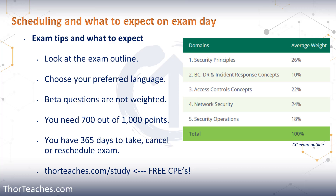On the exam, there will be beta questions or pre-test items — questions you are not graded on, and you won't know which they are. ISC2 is testing these out to decide whether to include them in future exams. They are randomly dispersed throughout the entire test, so answer all questions to the best of your ability. To pass, you need to score at least 700 out of 1,000 points. The questions are weighted, so a very easy question might be worth 2 points while a very hard question could be 10 points.